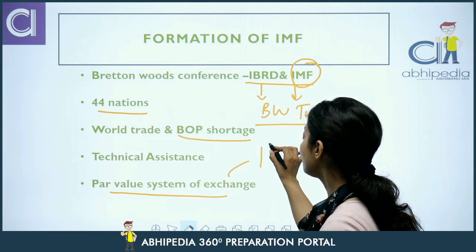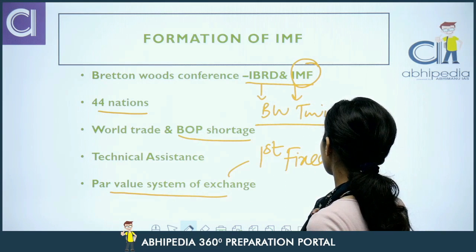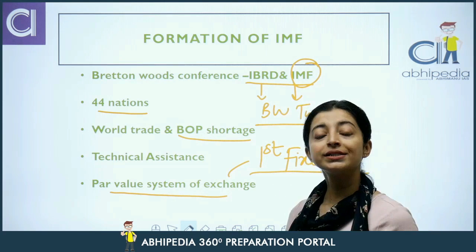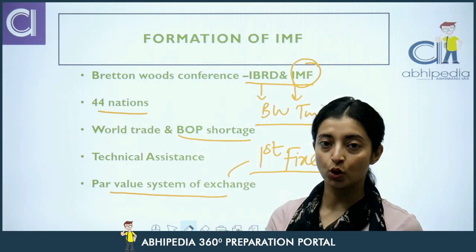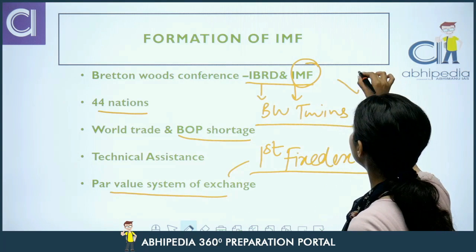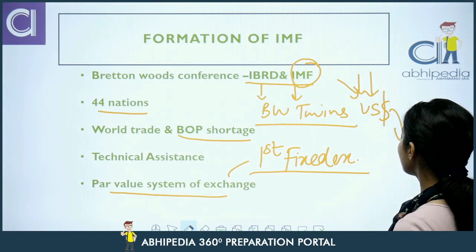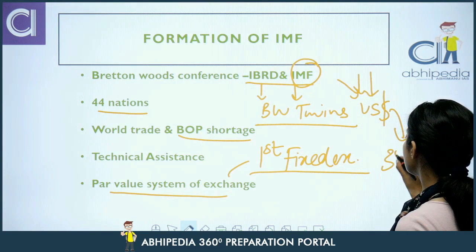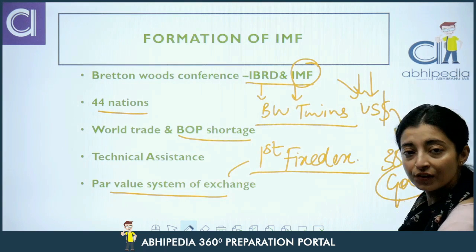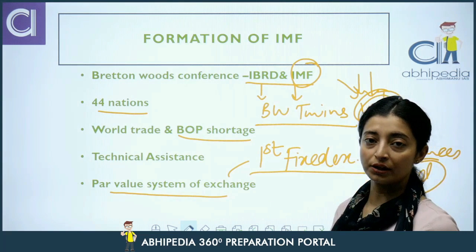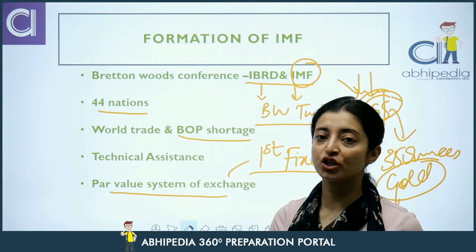Yeh kya tha? Yeh first fixed exchange rate system tha. Isme, sab currencies ki value US dollar ke saath peg kar di gayi — fix kar di gayi with respect to US dollar. Baaki saari currencies ki value ko fix kar diya gaya US dollar ke saath. Aur US dollar ki value ko fix kar diya gaya 35 ounces of gold ke saath. Isko hum kehte hain par value system of exchange, ya fixed exchange rate system.